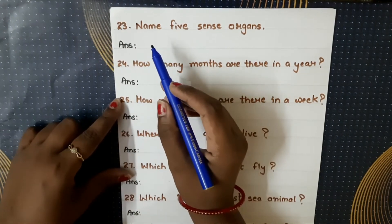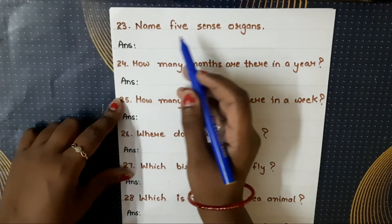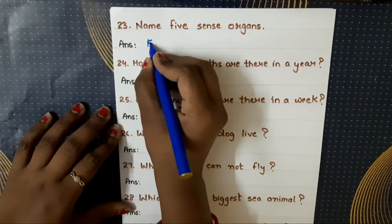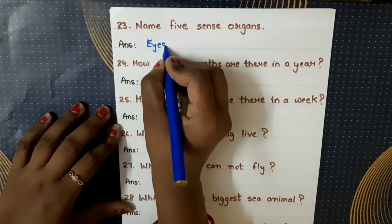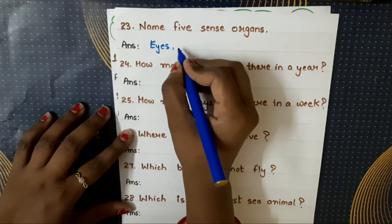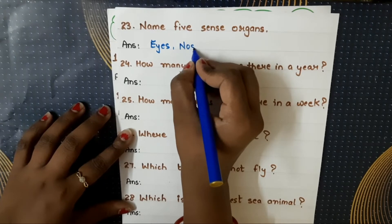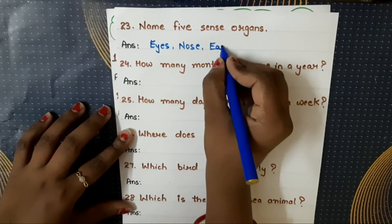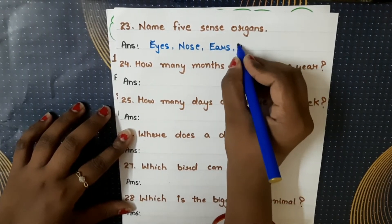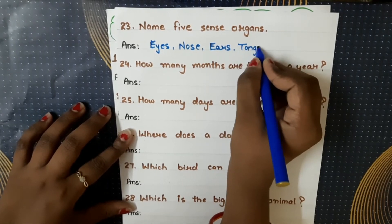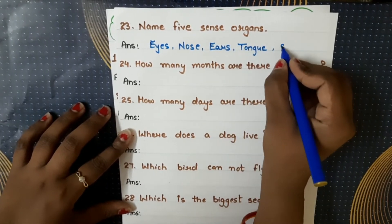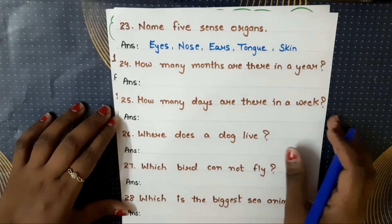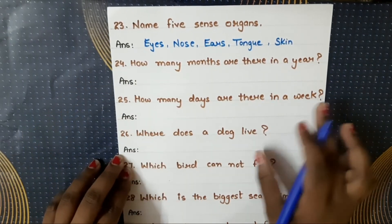Next question: name five sense organs. Five sense organs koun koun se hain? Eyes, nose, ears, tongue, and skin. They are the five sense organs.